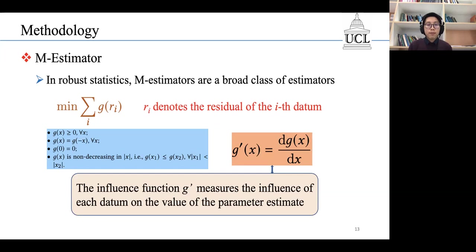We also define the influence function of g as its first-order derivative, g prime. The influence function g prime measures the influence of each datum on the value of the parameter estimate.